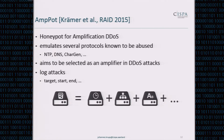Ampot works by emulating lots of protocols known to be abused, namely NTP, DNS, Chargen, and several more. The goal is to be selected as an amplifier in attacks. During those attacks, the honeypot can log lots of useful data: who is the target, when did attacks start, when did they end, how many packets were sent, and so forth.